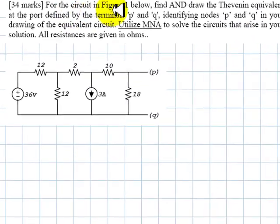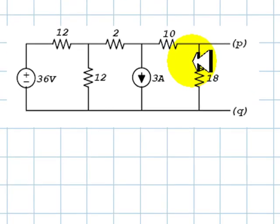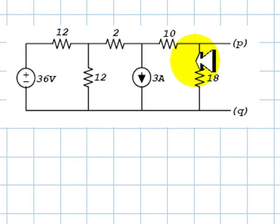For the circuit in figure 1 below, find and draw the Thevenin equivalent of the port defined by terminals PQ.